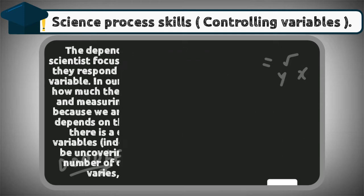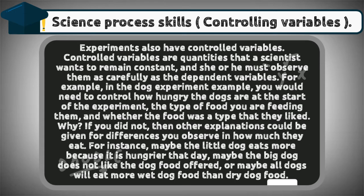The number of dependent variables in an experiment varies, but there can be more than one. Experiments also have controlled variables. Controlled variables are quantities that a scientist wants to remain constant, and she or he must observe them as carefully as the dependent variables. For example, in the dog experiment, you would need to control how hungry the dogs are at the start of the experiment, the type of food you are feeding them, and whether the food was a type that they liked. If you did not, other explanations could be given for differences you observe in how much they eat.